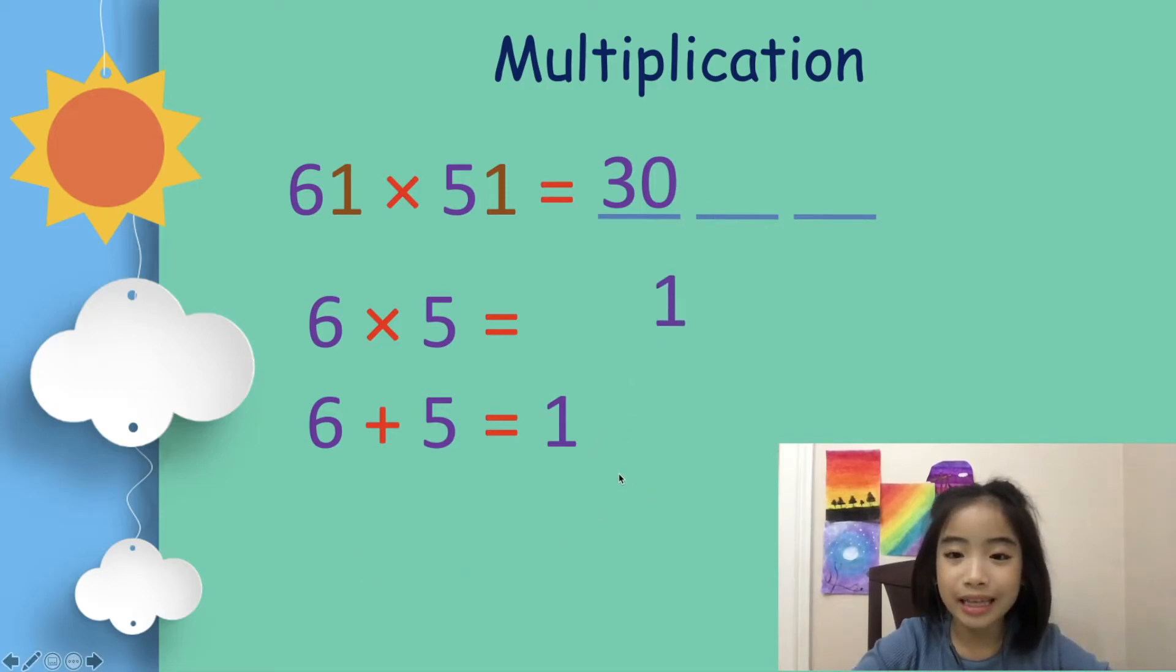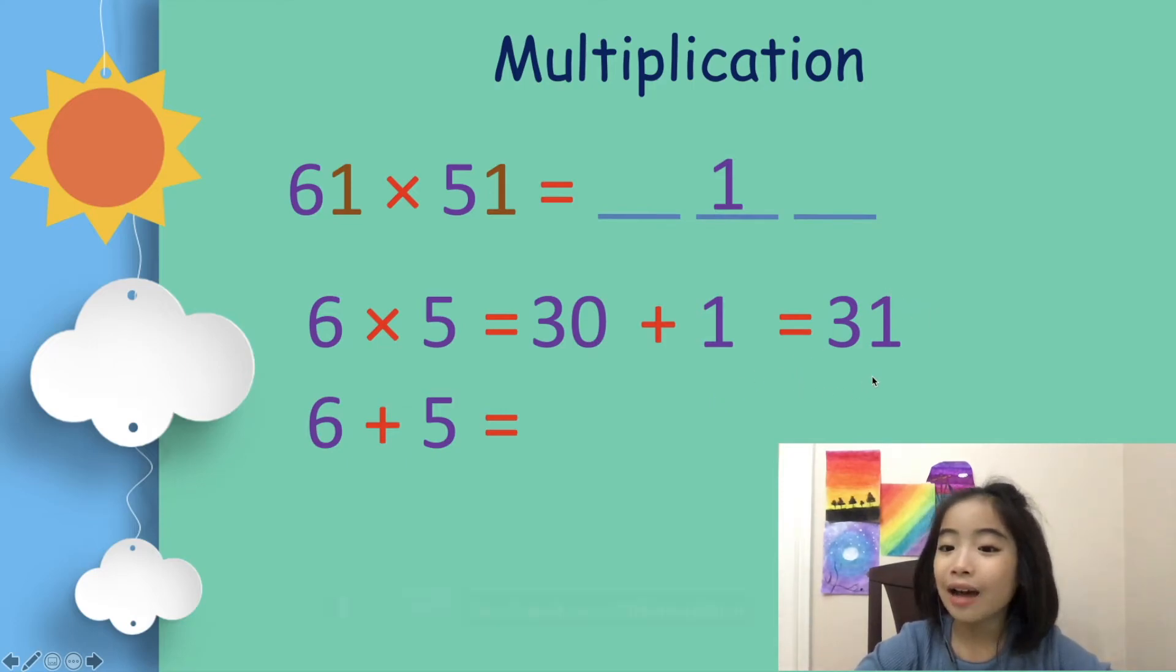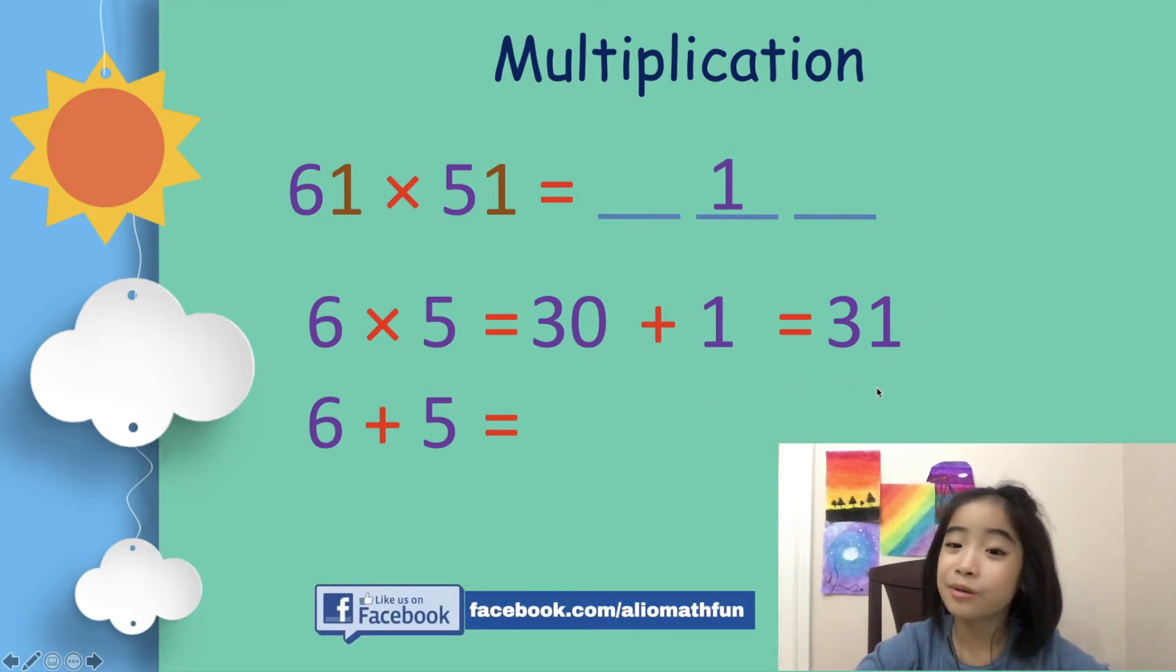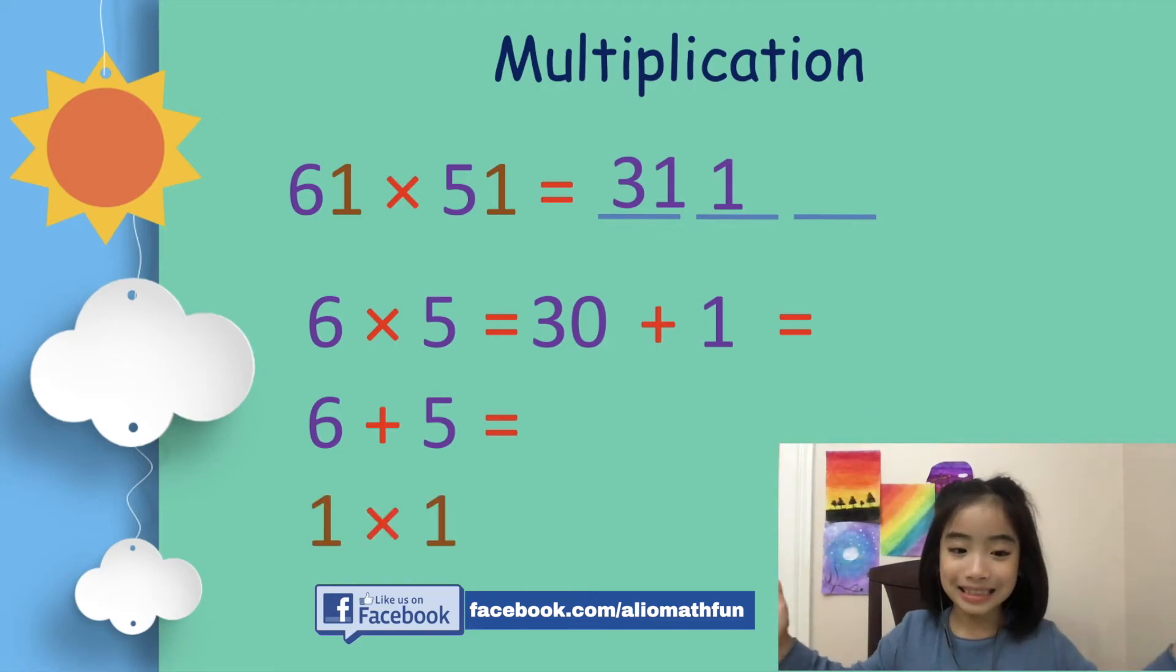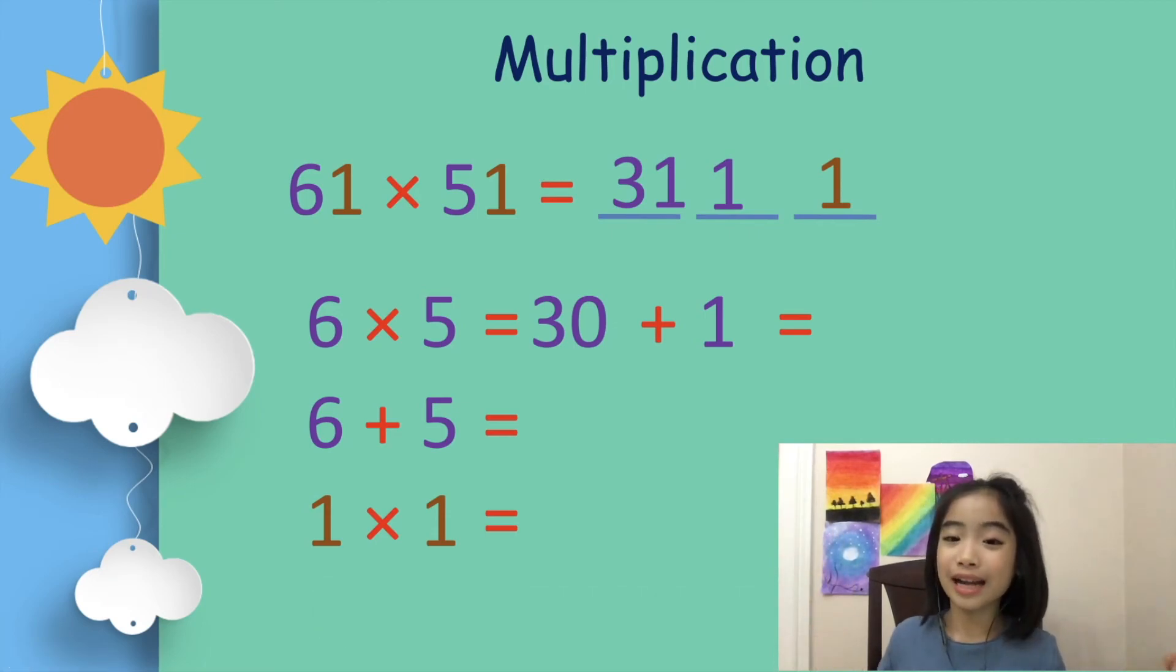we put the 1 in the 10th position. And we have 30 plus 1 equals 31. Now, let's put the 31 back where it was. Lastly, we have 1 times 1 equals 1. So let's put the 1 in the 1's position. Voila! The answer is 3,111.